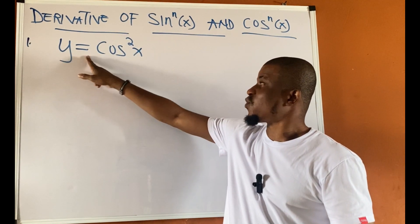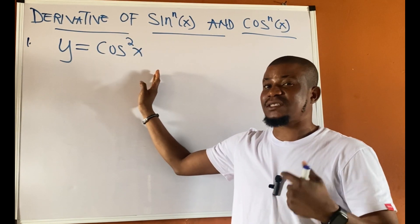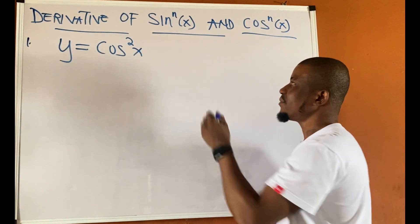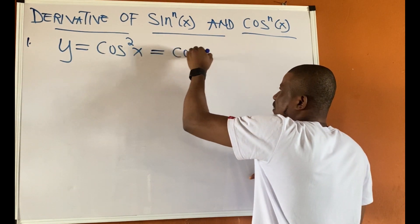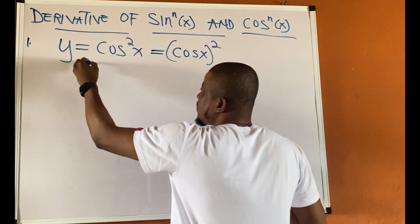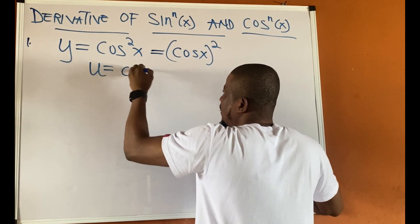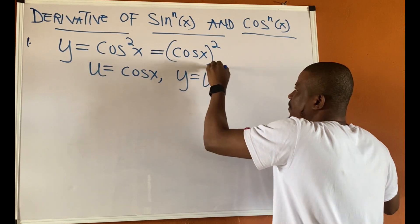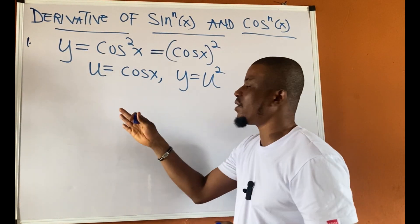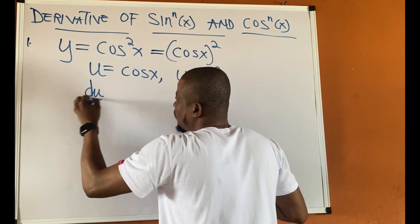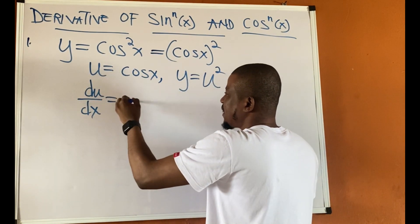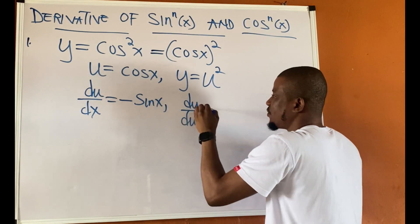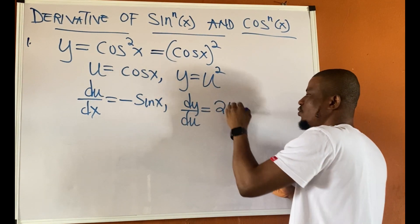Let's look at y equal to cos squared x. This can be written as cos x to power 2. Our u this time is cos x — the inside function — and y is u to power 2. The next step is to find du/dx, which gives negative sin x from differentiating cos x, and dy/du, which gives 2u from algebraic differentiation.